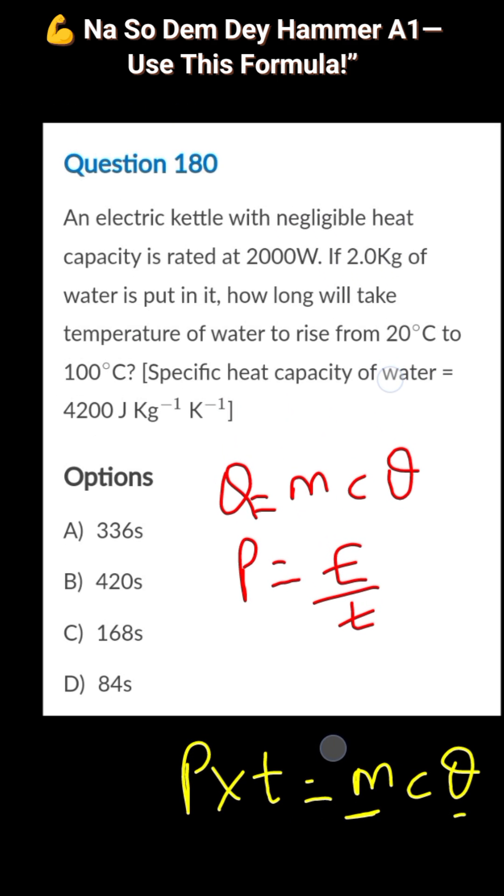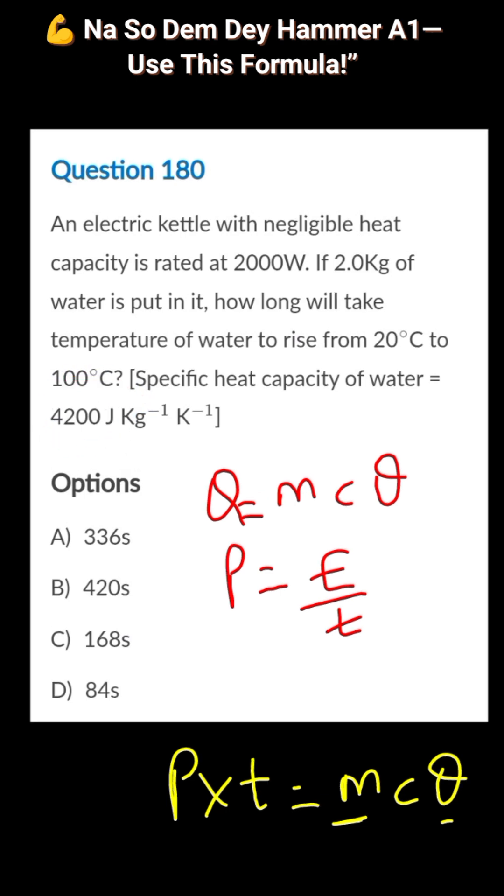Let's go to the question and supply the values. This is power here, which is 2000 watts. This is the mass, they're giving us the mass. This is the temperature 20 degrees C, that is t1. This is the second temperature t2. You just subtract them to get the temperature change. And this is the value of c, which is the specific capacity of water.